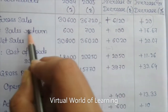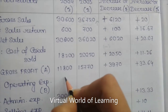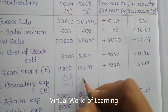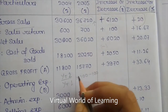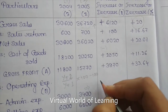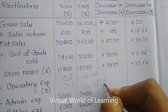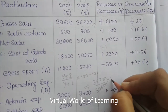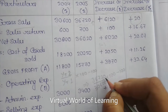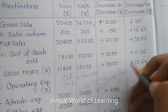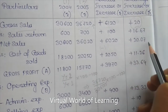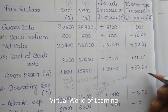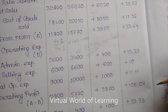For the percentage increase or decrease column, I'll explain the formula again using gross sales as an example. The formula is: (Year 2 value divided by Year 1 value) multiplied by 100, minus 100. For gross sales: (Year 2 value divided by Year 1 value) multiplied by 100, minus 100 — this comes to 20%. There is no need to write the percentage sign for each item since it is already indicated in the column heading.